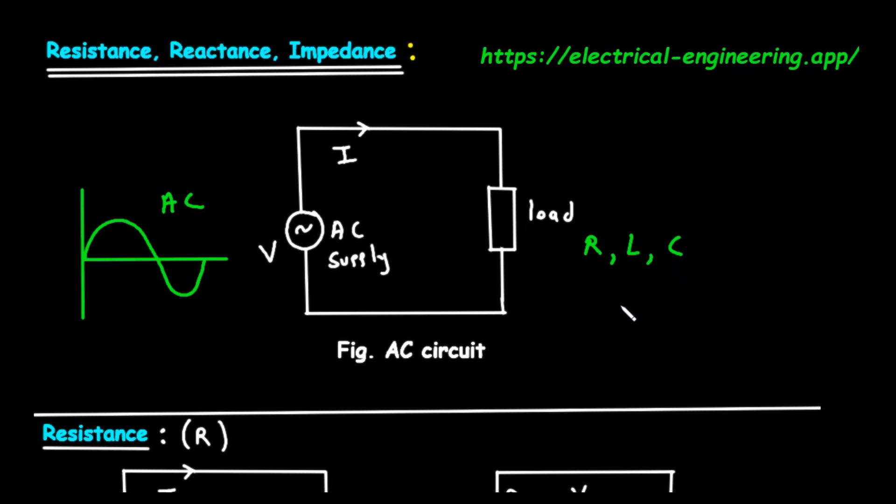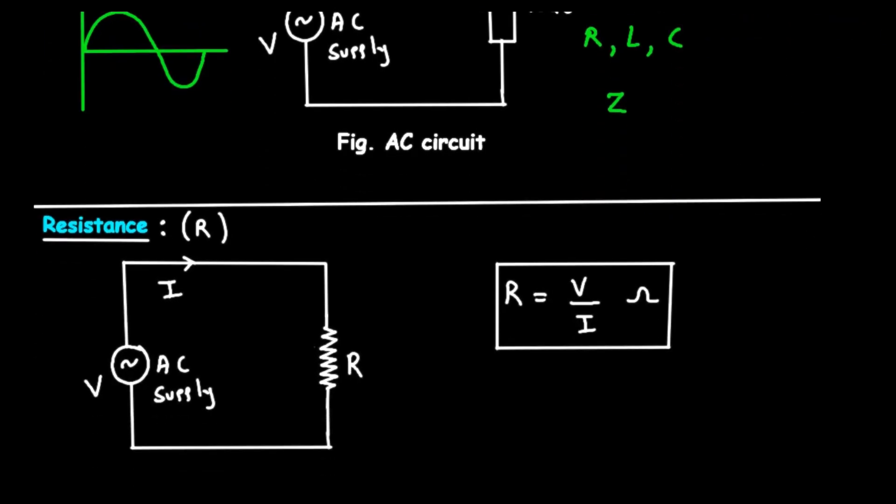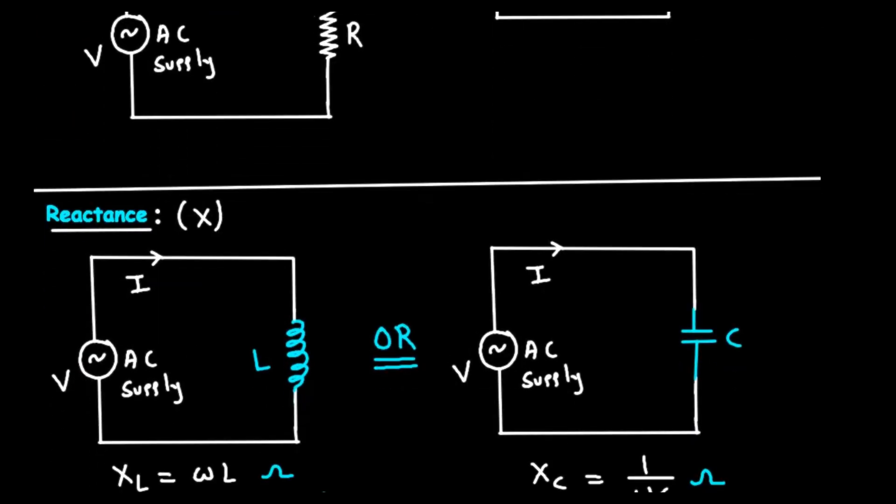The total opposition that this load presents to the flow of the AC current is what we are here to understand. This total opposition is called impedance. But to understand impedance, we first need to understand its two building blocks: resistance and reactance.